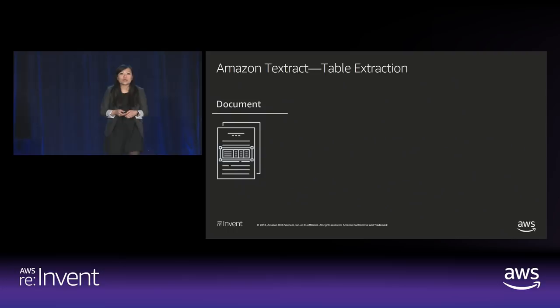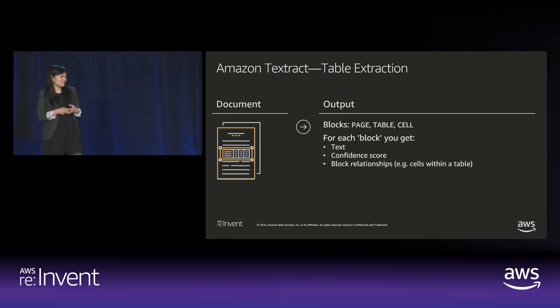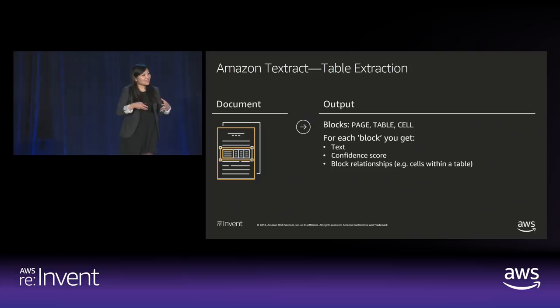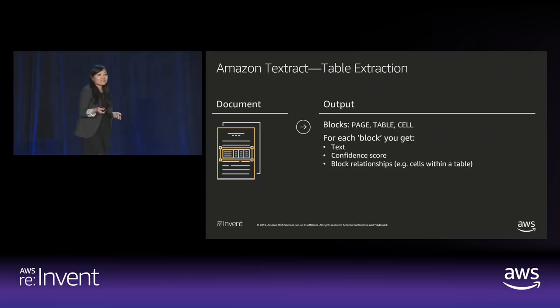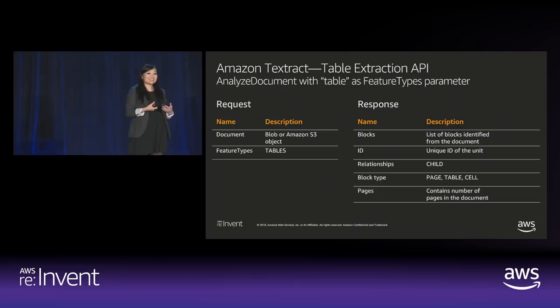For table extraction, you provide a document with a table, we detect that table, and return building blocks to understand what's in it. At the lowest level we have cells belonging to a table belonging to a page, and within those cells are the words. Whether that's a word or a multi-line entry, we still group it as it was meant to be read. We also return confidence scores and relationships. For table extraction you use the AnalyzeDocument API with 'TABLES' passed as the feature type.